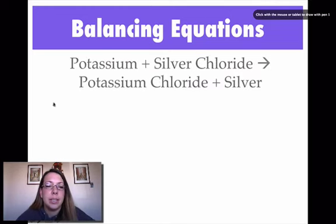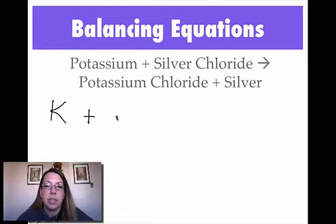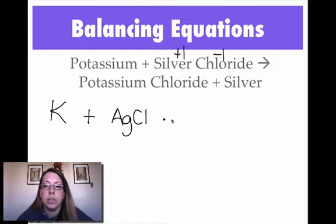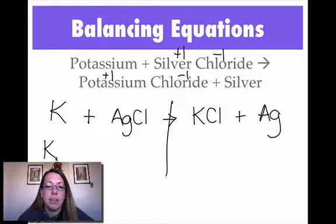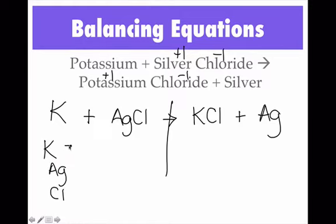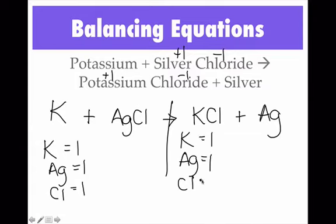The next one: potassium (K) — not a diatomic, so it's just K by itself. Silver chloride: silver is +1, chlorine is −1, so I just need one of each — AgCl. Potassium chloride: potassium is +1, chlorine is −1, so that's KCl. And silver is not a diatomic, so it's just Ag by itself. On this side I have potassiums, silvers, and chlorines — one of each — and I have the same thing on the other side. I don't have to add coefficients; it's already balanced once I wrote it.